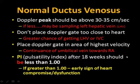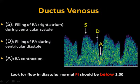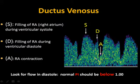The PI after 18 weeks should be less than 1. If greater than 1, that's an early sign of heart compromise or dysfunction. Looking at the waveform: S/D is the filling of the right atrium during ventricular systole, D is filling during ventricular diastole, and A is right atrial contraction. We look for forward flow in diastole with normal PI below 1. Using color on a transverse view, identify the hepatic coming to IVC, the umbilical vein, and the ductus venosus — color tells you exactly where to put your Doppler gate. Normal values sit right around 50 cm/s.